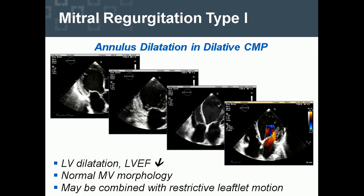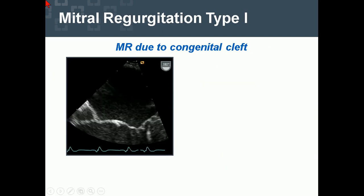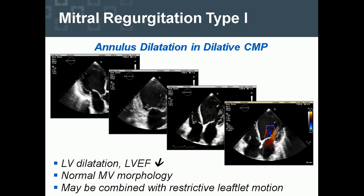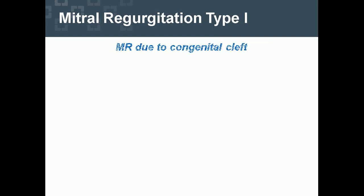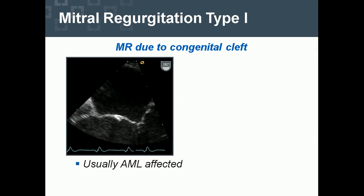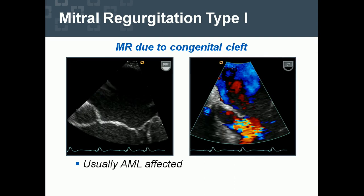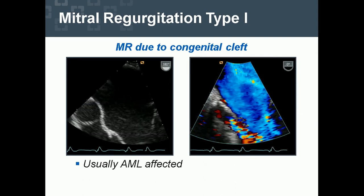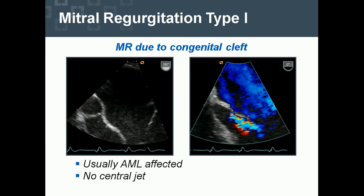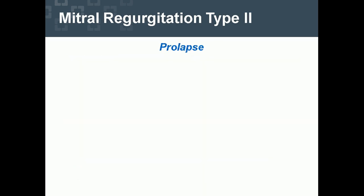Ask for these cut planes: the two-chamber view, the three-chamber view, the four-chamber view, and color mode. MR due to congenital cleft — usually the anterior mitral leaflet is affected. Perforation also belongs to type 1, as can be seen here where there is no central jet. It may be combined with ASD of the primum type.